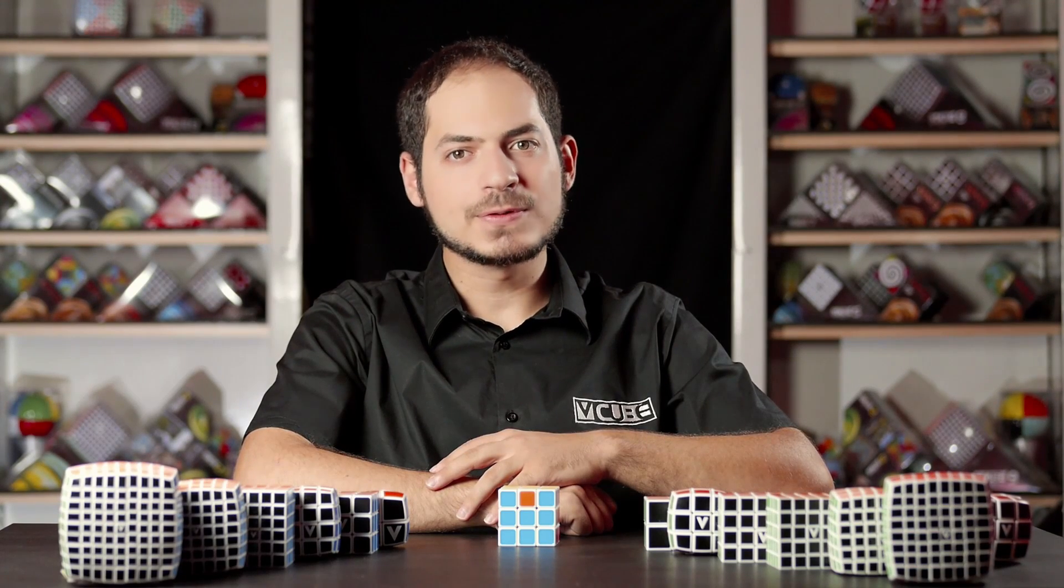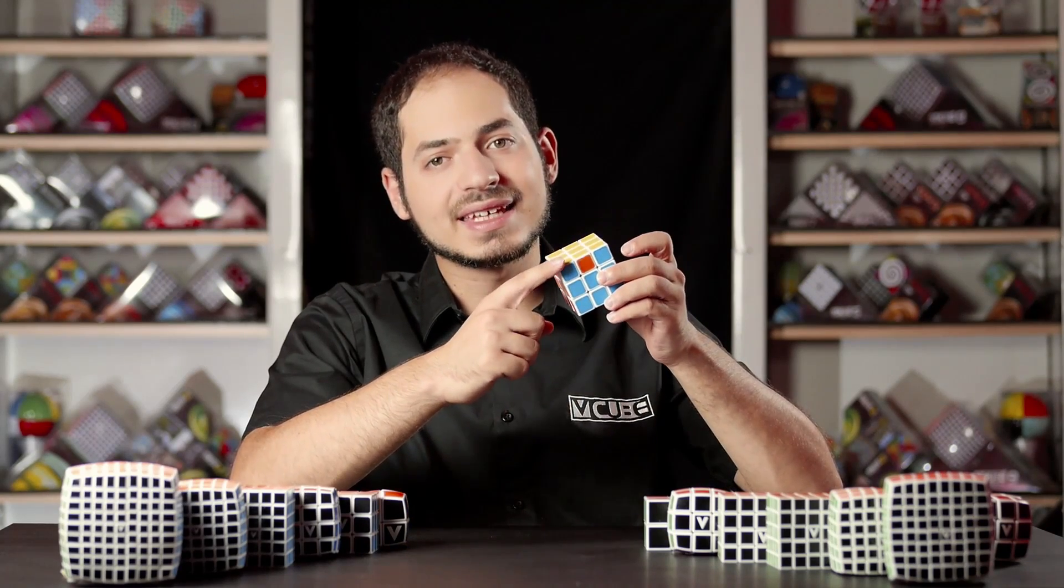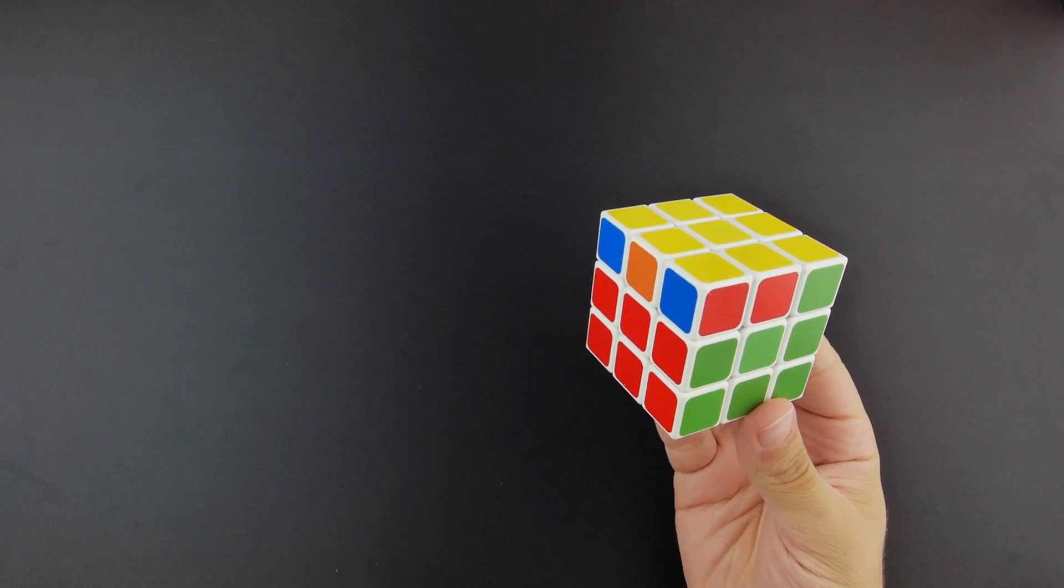Welcome to the sixth step of solving the V-cube 3. In this step we will permute the yellow corners, which means that we will go from this into this.